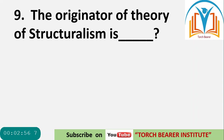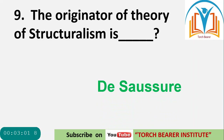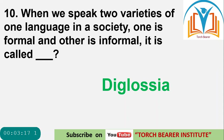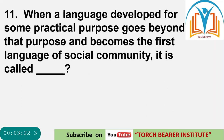Question 9: The originator of the theory of structuralism is De Saussure. Question 10: When we speak two varieties of one language in a society — one formal and the other informal — it is called diglossia.